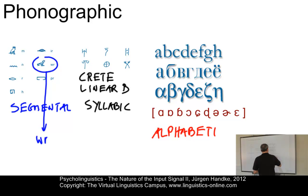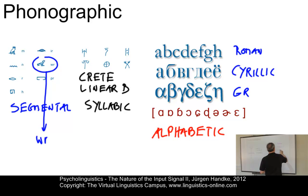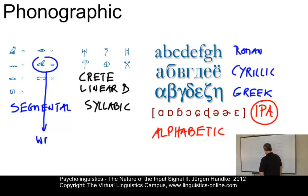There are several alphabets. For example, the first is the Roman or Latin alphabet. The next is the Cyrillic alphabet. Then we have the Greek alphabet. Further examples include the Georgian alphabet, the alphabet used in Hindi. And last but not least, represented in red because it's the most important alphabet in linguistics, the International Phonetic Alphabet as devised by the International Phonetic Association.